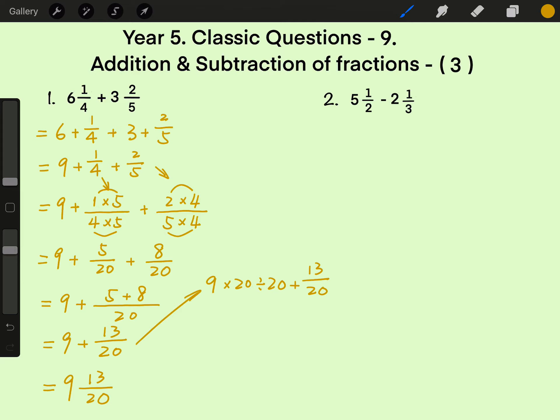9 times 20. A zero, a zero. 9 times 2 is 18. So 9 times 20 equals to 180.